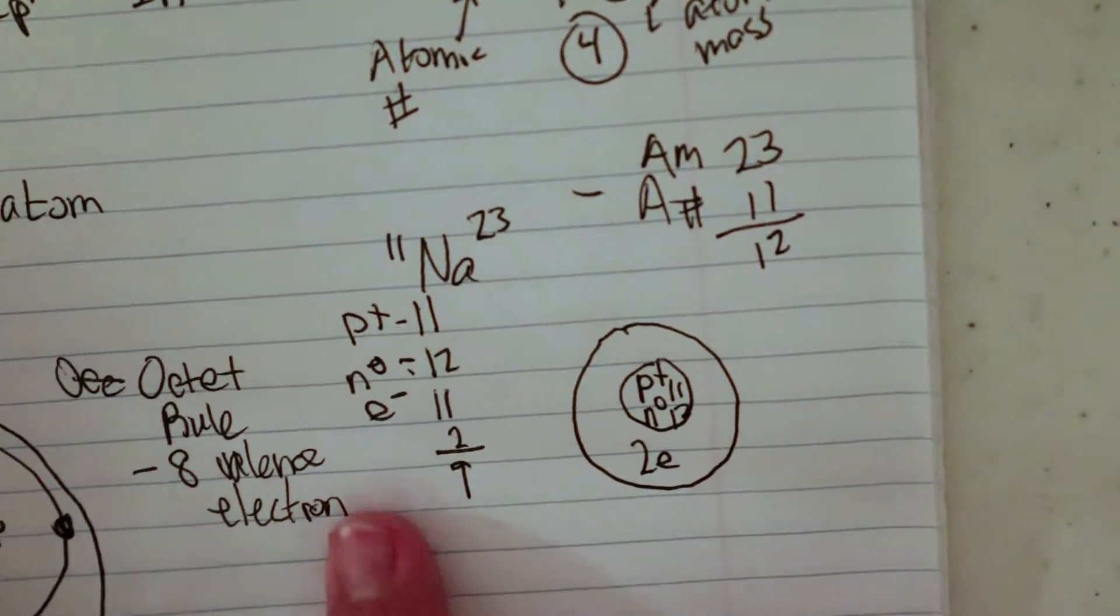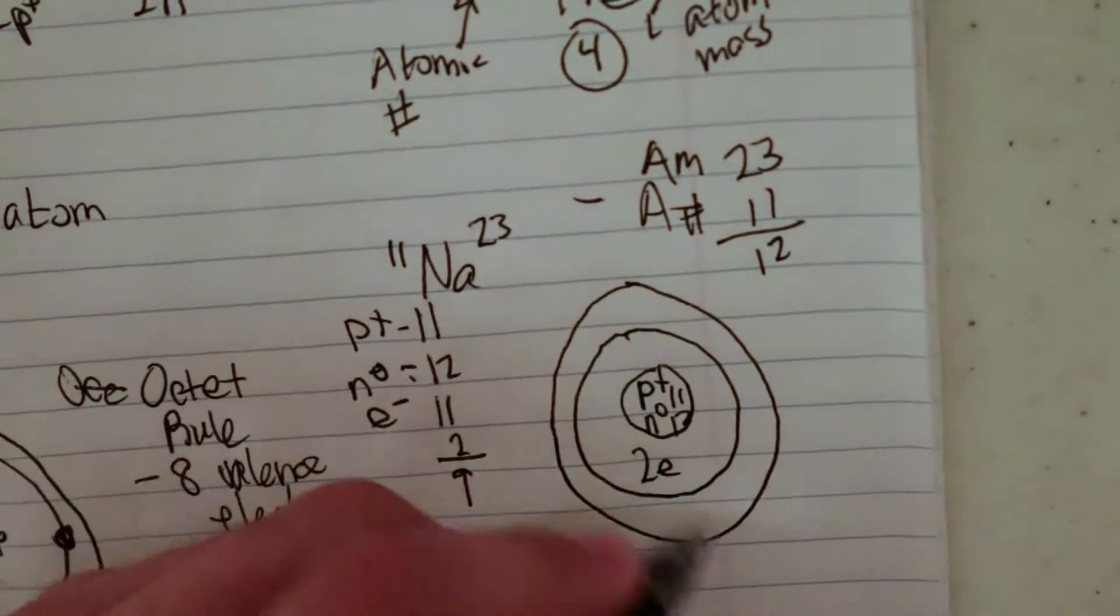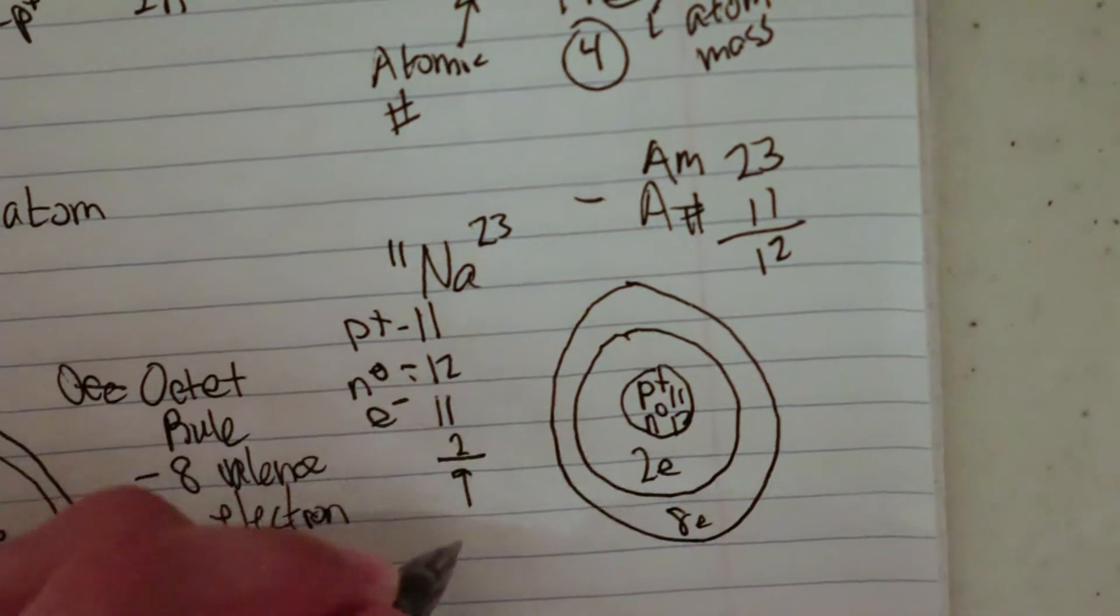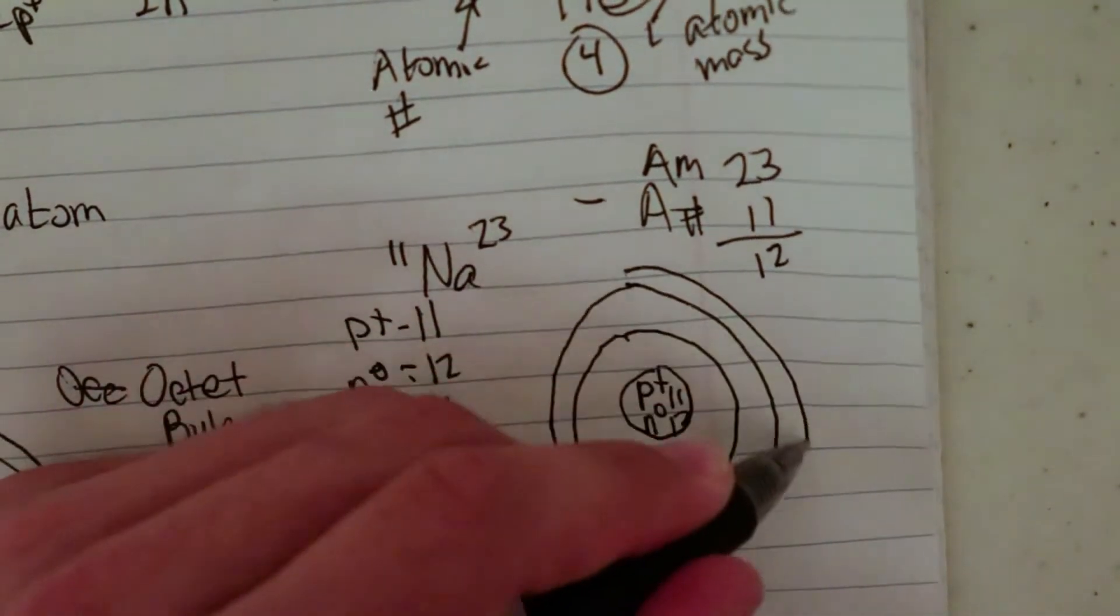I have nine electrons remaining that I can pull from. So I'm going to draw another ring. And this one can hold eight, so I'm going to put eight in here. Eight minus nine leaves me with one electron left.